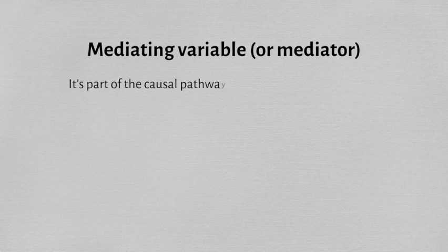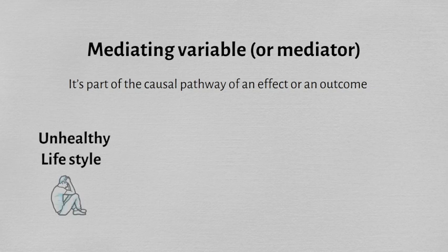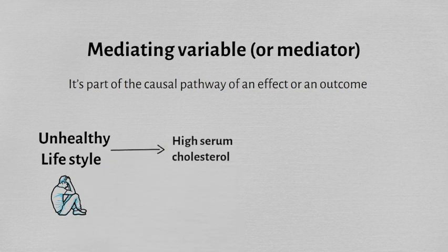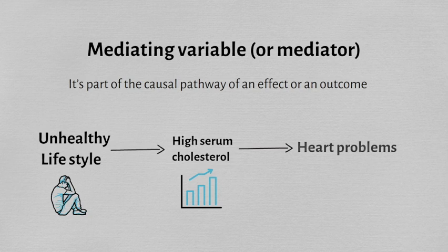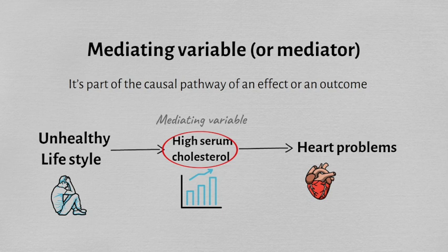Mediators or mediating variables explain the process of how or why an effect or outcome takes place. For example, unhealthy lifestyles can cause increased serum cholesterol levels, which can then cause heart problems. So serum cholesterol level is a mediating variable, which is part of the causal pathway of an effect — in this case, heart problems.